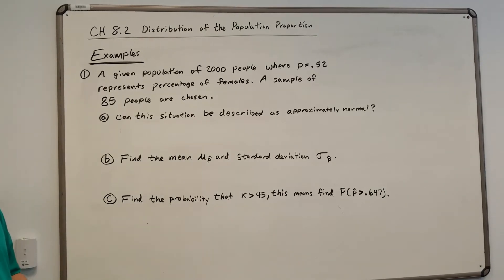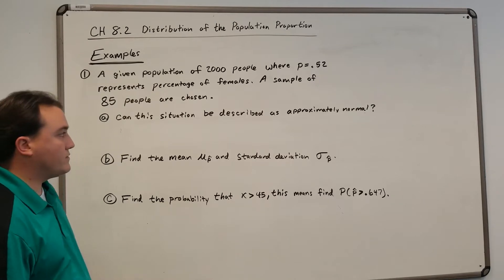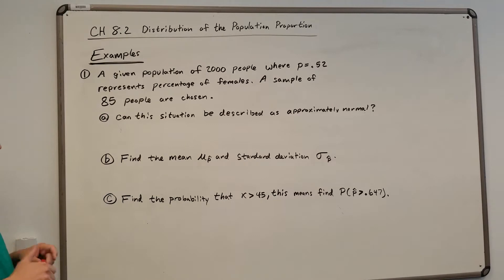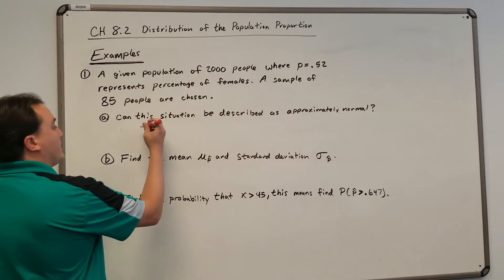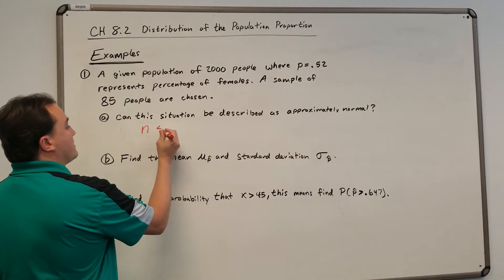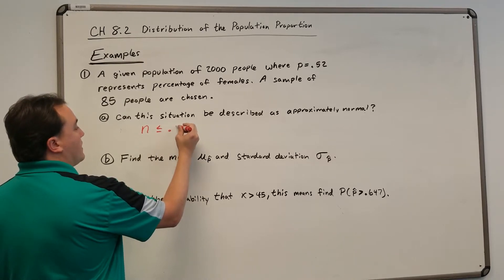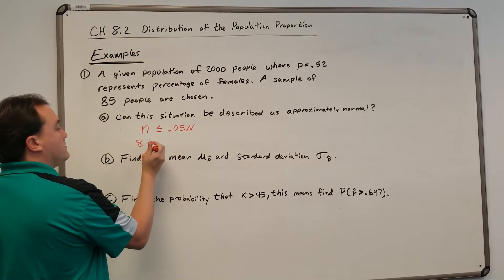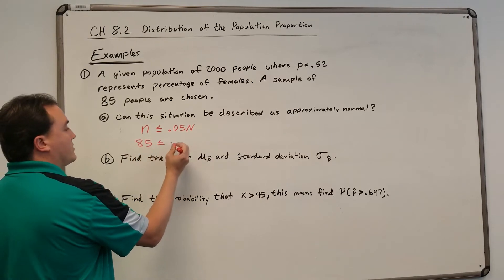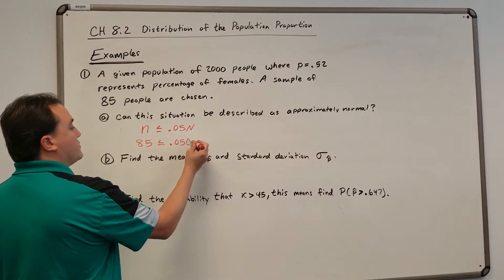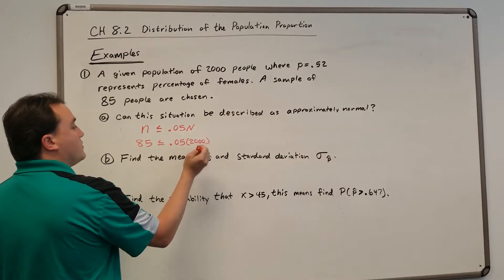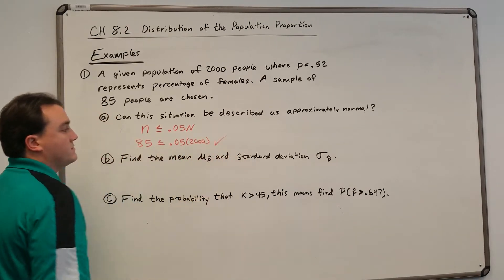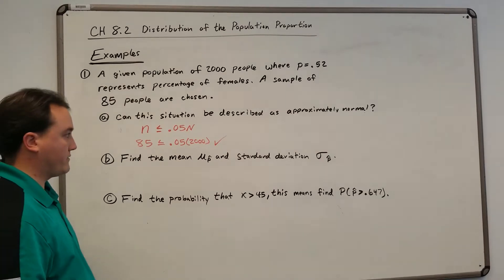Can this situation be described as approximately normal? For the situation to be approximately normal, we have two equations to check. The first is n must be less than or equal to 0.05 times the population. Is 85 less than or equal to 5% of 2,000? Well, 5% of 2,000 is 100, so 85 is less than 100 — check. That's part one.